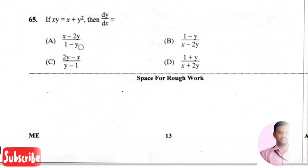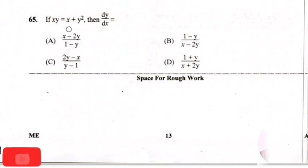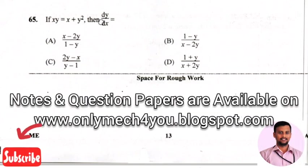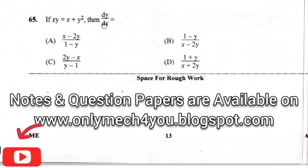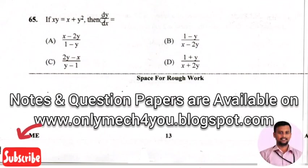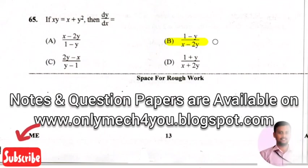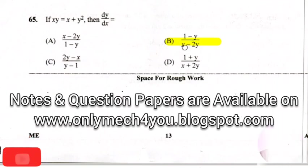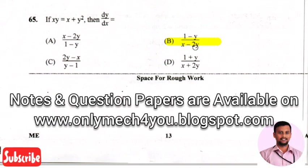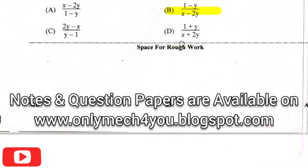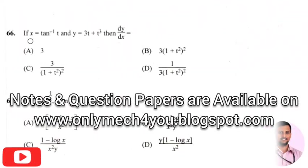The next question: if xy equals x plus y squared, then dy/dx is? The right answer is option 2, that is 1 minus y divided by x minus 2y.